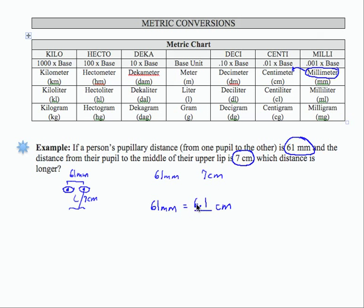61 millimeters is 6.1 centimeters, and 6.1 centimeters is smaller than 7 centimeters. So I can write my relationship this way. Which distance is longer? The distance from the pupil to the upper lip is the longer distance.